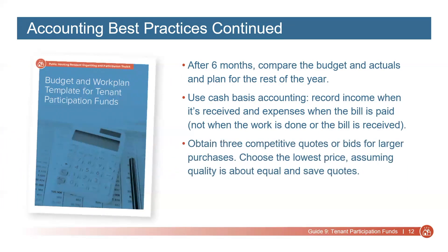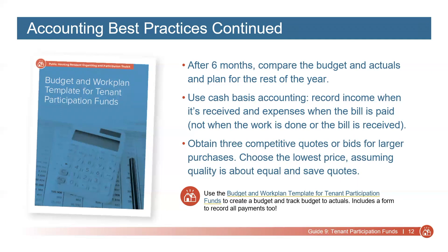Obtain three competitive quotes or bids when purchasing equipment, such as a tablet or computer, or any more expensive purchases based on the agreement with the PHA. Choose the lowest price, assuming quality is about equal, and save quotes for the audit. You can use the budget and work plan template and the disbursement form provided in the toolkit to stay organized.